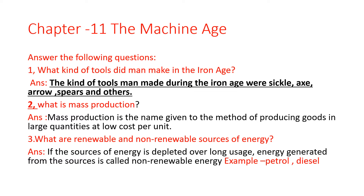First question: What kind of tools did man make in the Iron Age? The kind of tools man made during the Iron Age were sickle, axe, arrow, spears, and others. What is Mass Production? Mass Production is the name given to the method of producing goods in large quantities at low cost per unit.